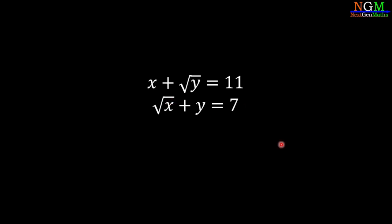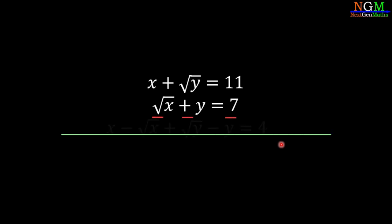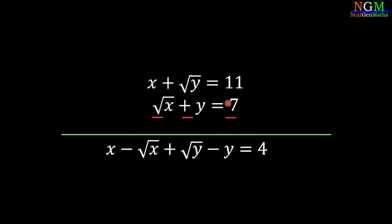Now in the next step, we take the subtraction between the two equations. Then we have x minus root x plus root y minus y equals 11 minus 7, which equals 4.